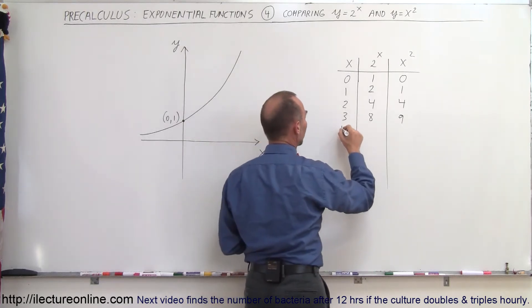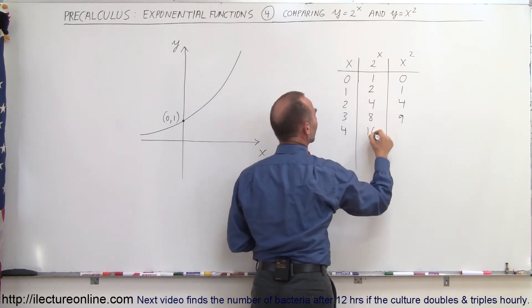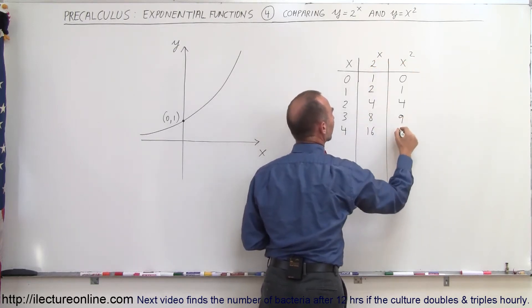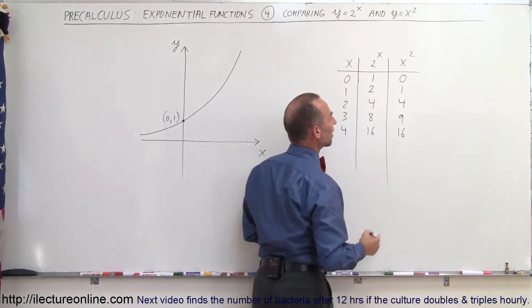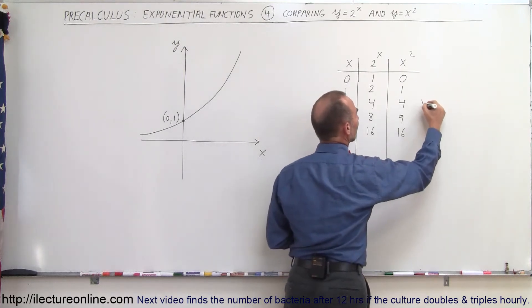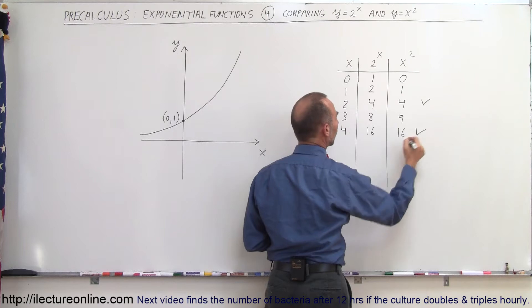Now when x is equal to 4, we have 2 to the fourth power, which is 16 and 4 to the second power, which is 16. Here they're the same value again. So they're the same value when x is equal to 2. They're the same value when x is equal to 4.